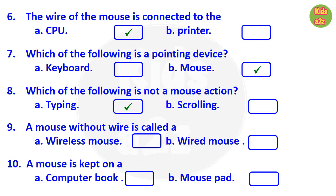Question number nine: a mouse without wire is called a — answer is option A, wireless mouse. Question number ten: a mouse is kept on a — answer is option B, mouse pad.